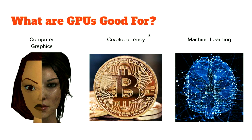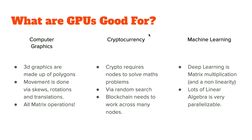What is something that unites all of these things? At a really simplified level, computer graphics are basically made up of 3D polygons. Movements are done by rotations and skews, which are just matrix operations. So graphics can be fundamentally decomposed into matrix operations. Machine learning is very similar — deep learning is just matrix multiplication. A lot of machine learning is actually just linear algebra, like singular value decompositions that give you PCAs. Cryptocurrency is really about solving math problems using random search, which is fundamentally distributable and works well with the CUDA compute model.